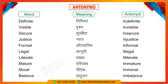Next one is 'Justice,' which means fairness, and 'Injustice' means unfairness. Next one is 'Formal,' meaning official or structured. 'Informal' means casual or unofficial. For example: There are some formalities in this letter. Next is 'Legal,' meaning lawful, and 'Illegal' means unlawful. For example: It is illegal to smoke in a public area — this is the law.